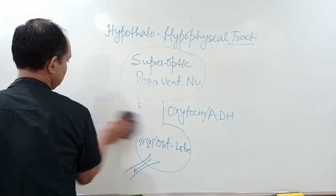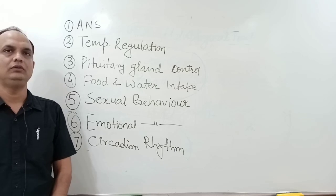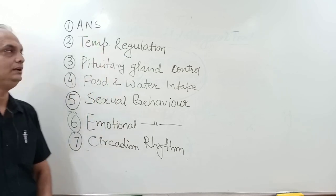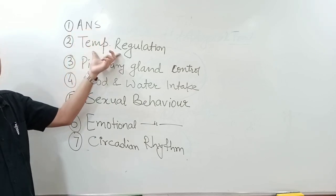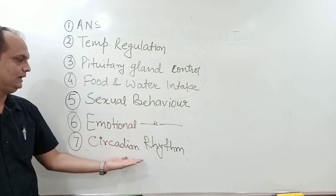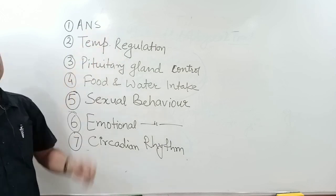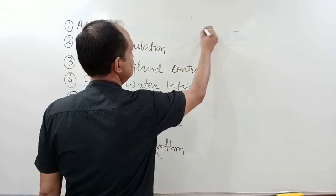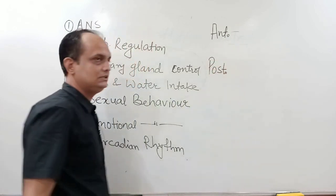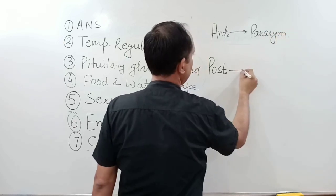Now we will discuss the functions of hypothalamus. The main functions are: autonomic nervous system control, temperature regulation, control of the pituitary gland, food and water intake, sexual behavior, emotional behavior, and control of the biological clock or circadian rhythm. The anterior part of the hypothalamus affects parasympathetic outflow, while the posterior part affects sympathetic outflow.